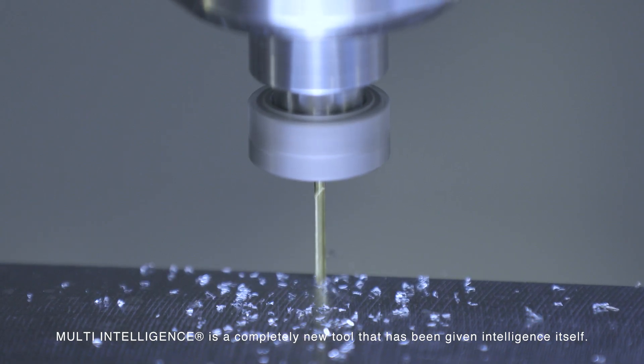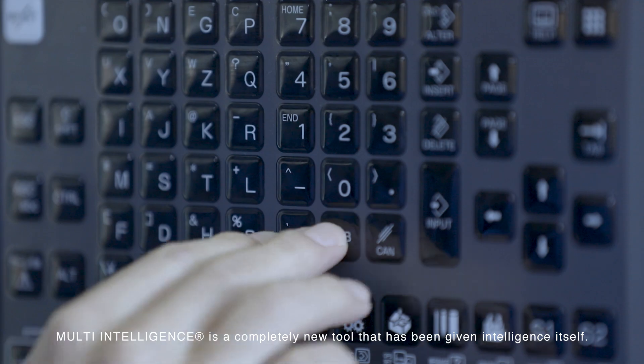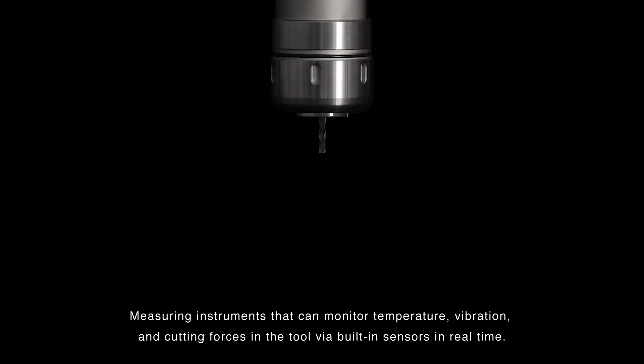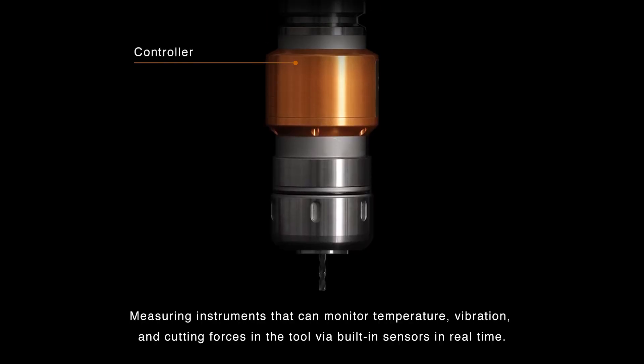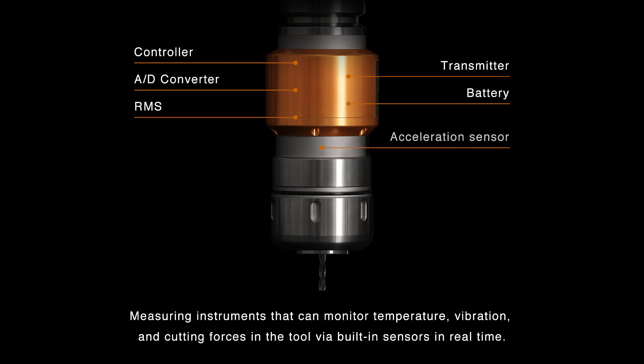At present, innovation is about to occur at machining sites. Multi-Intelligence is a measurement instrument incorporating sensors and drills and mills or FSW friction stir welding tools so that temperature, vibration, and cutting force can be monitored during processing in real time.